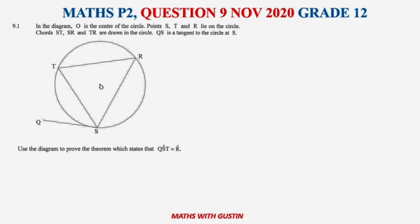Let's look at November 2022 Question 9, Math Paper 2 Grade 12. In the diagram, O is the center and points S, T, and R lie on the circle. Chords ST, SR, and TR are drawn in the circle where QS is the tangent to the circle. This question has multiple ways you can solve it, so please pay attention until the end.